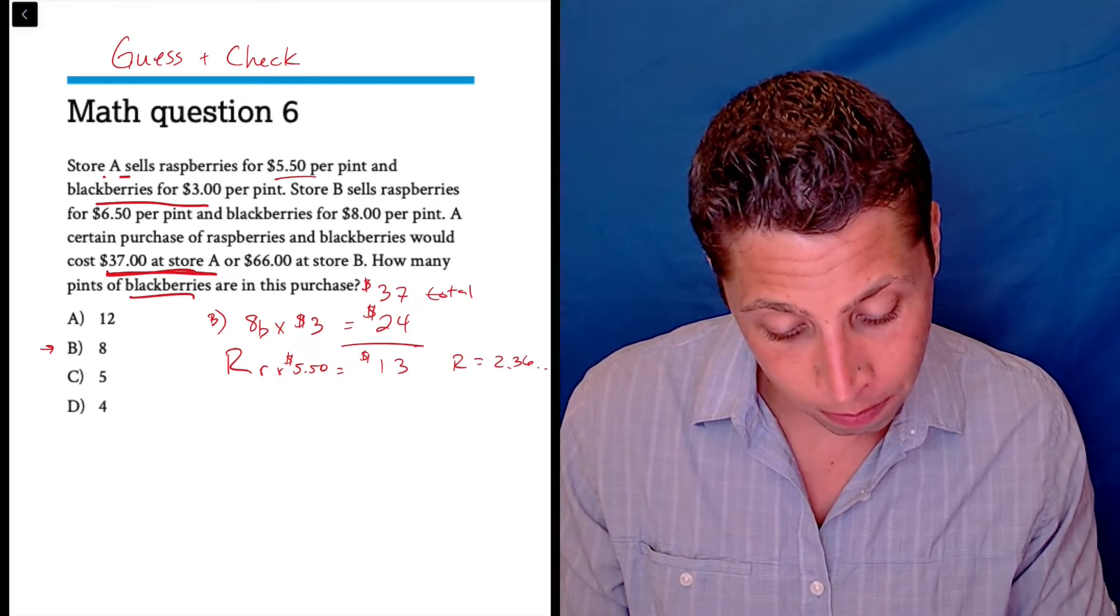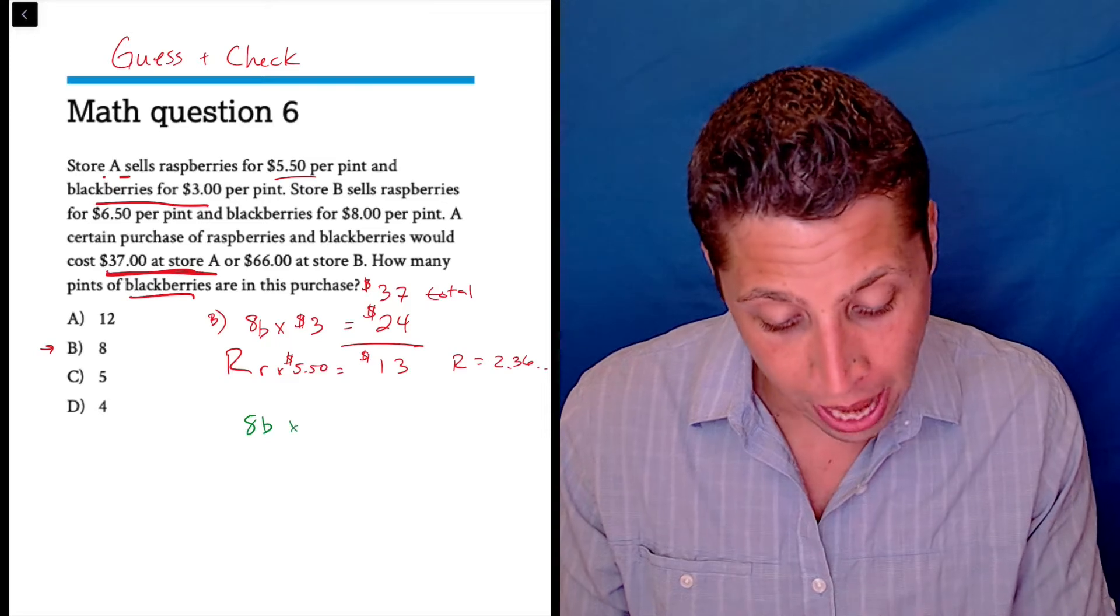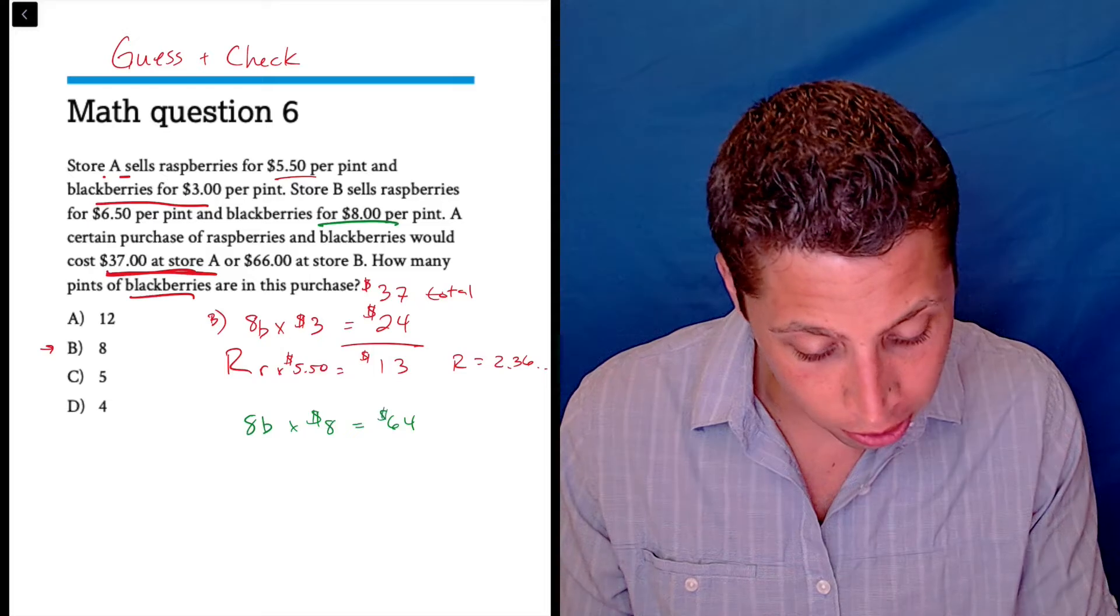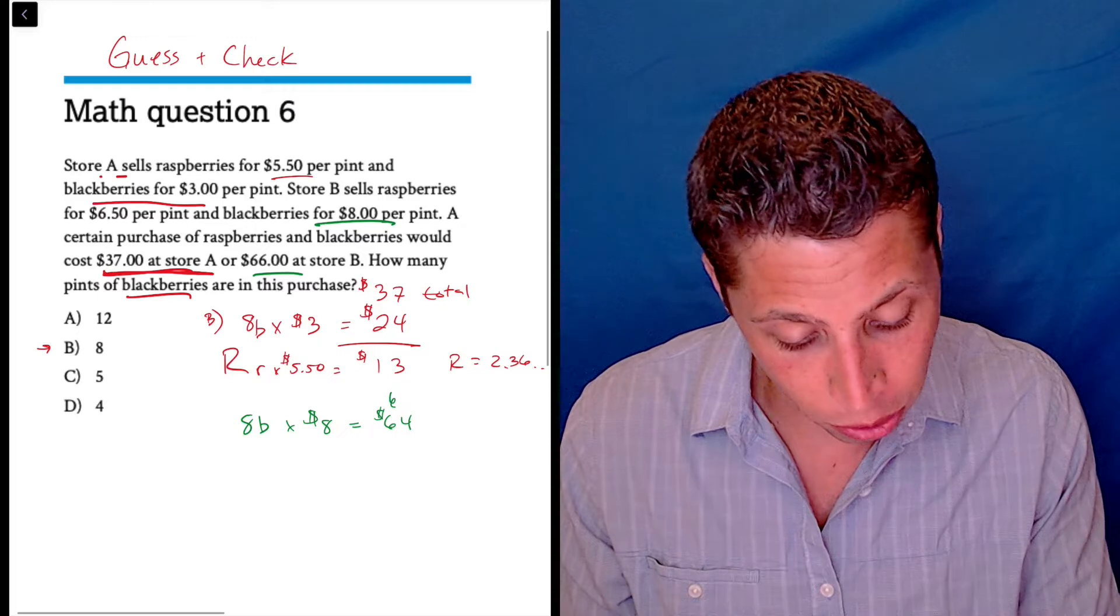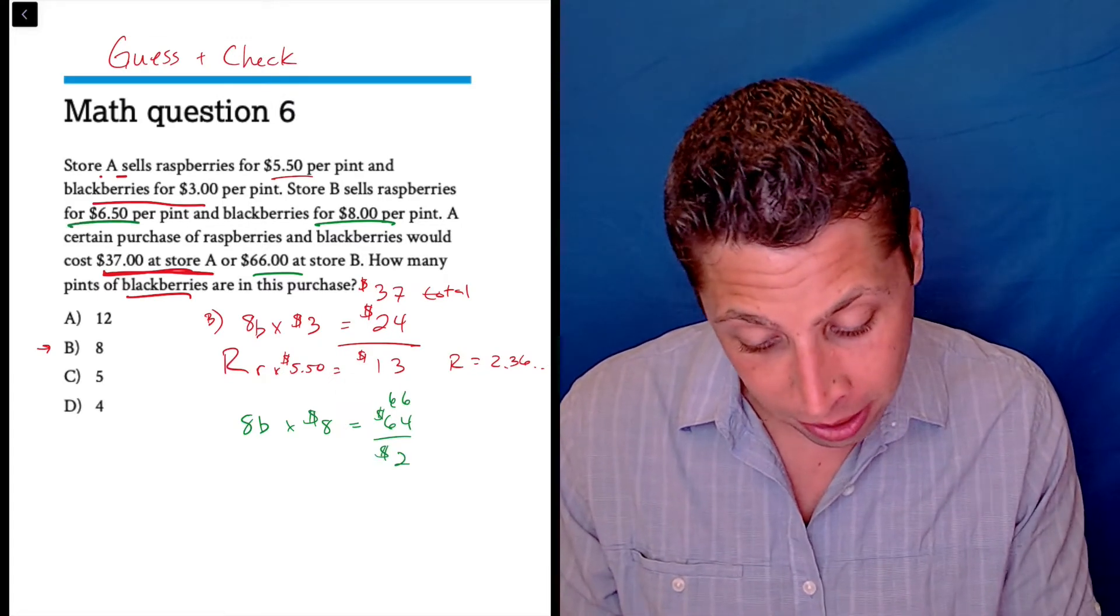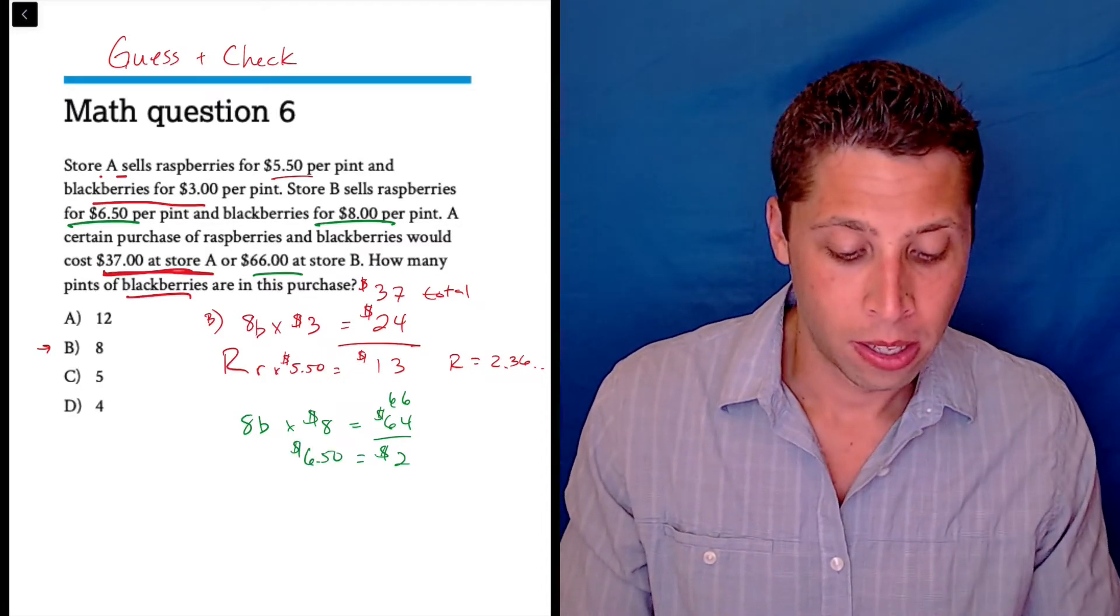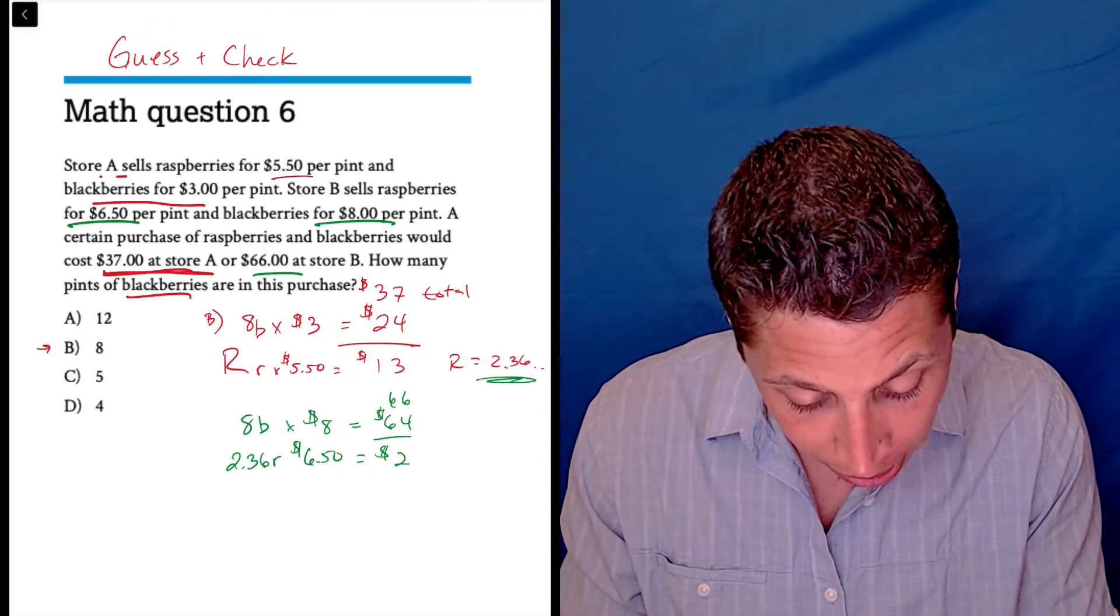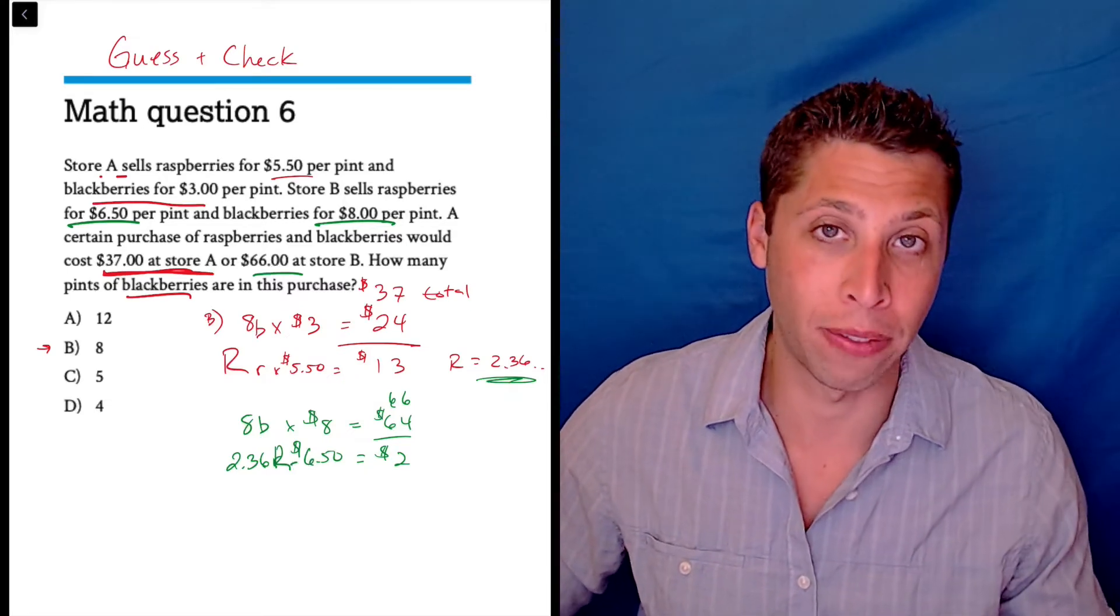We haven't touched that. So what do they say about store B? Well, 8 blackberries would still need to be there. At store B, they're $8 a piece. So that's $64. Oof, that's a lot of blackberries. And then that's $66 total. So wait a minute here. That's $2 left over. And raspberries are $6.50 a pint. Doesn't make sense. So we would need 2.36 to be the amount of raspberries here. And that number doesn't add up to the two that we have left over.